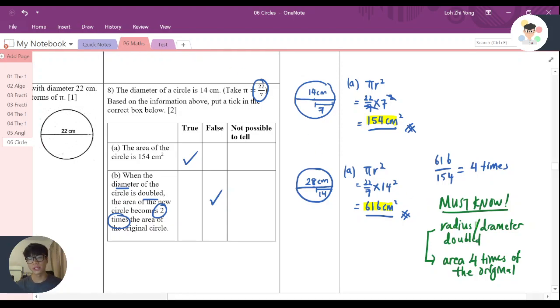If your radius or diameter is being doubled, your area is for sure 4 times the original amount. A very good example is this one. This is the one I've tried.